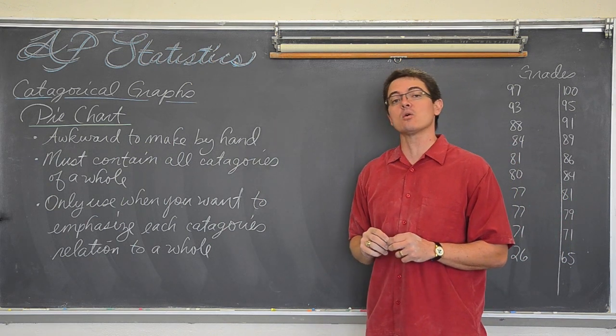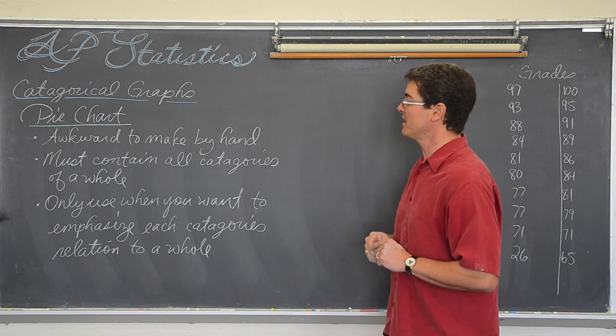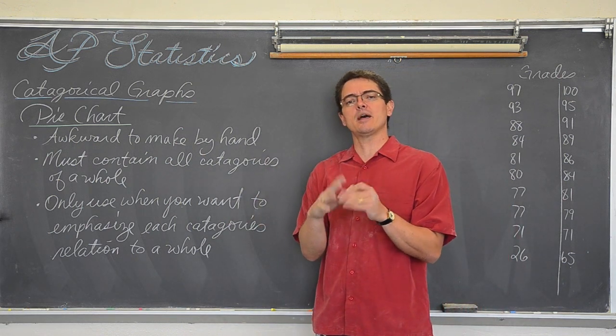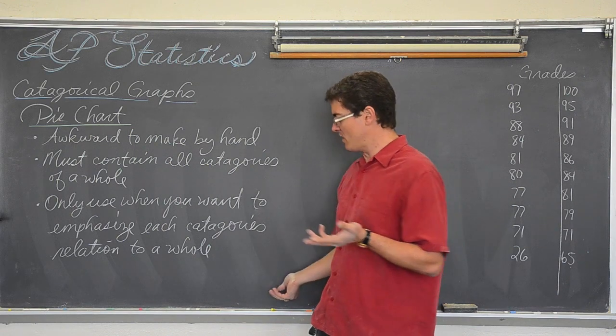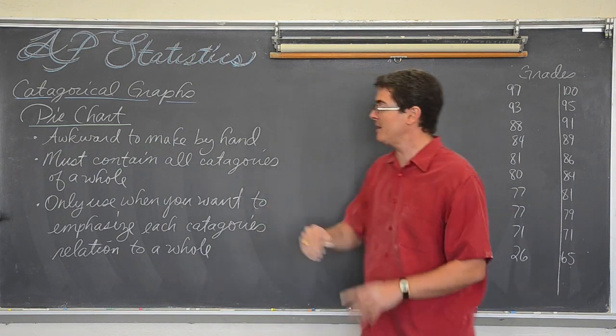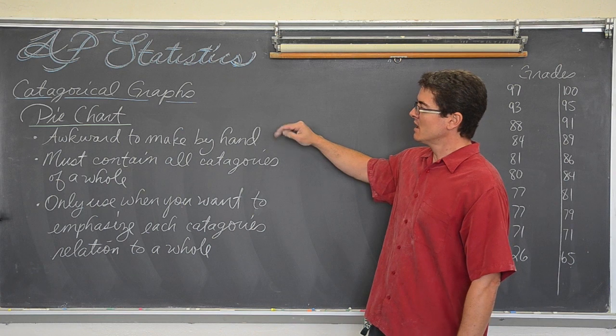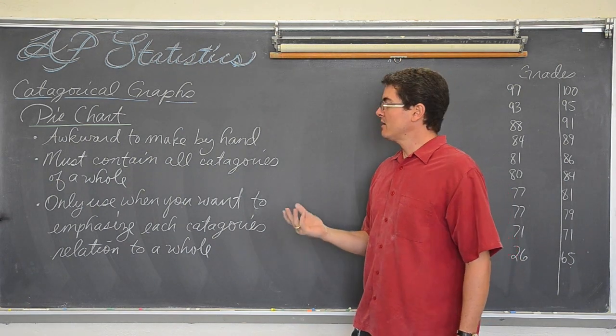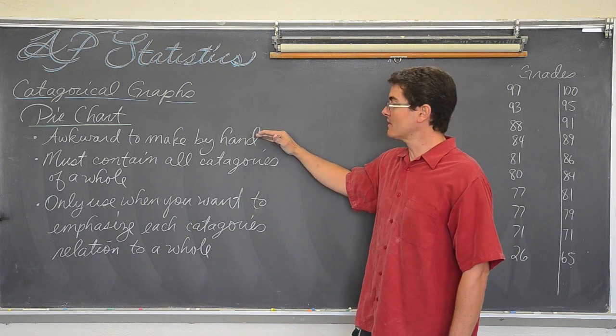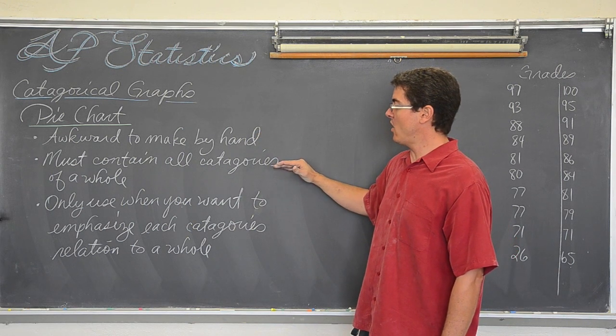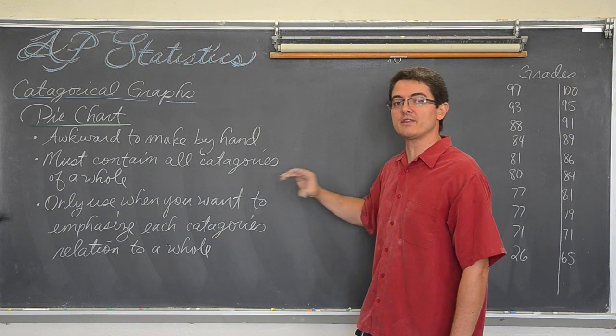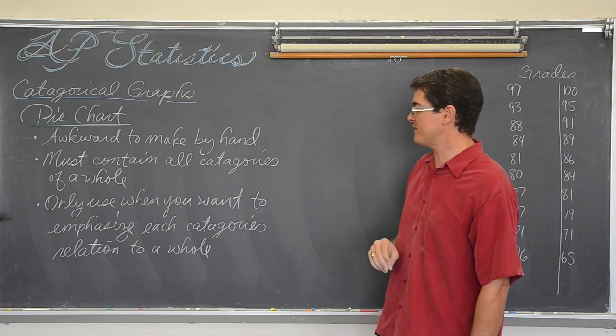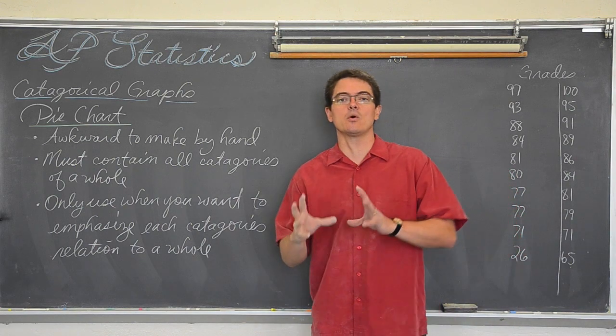That is the categorical variable, or we are going to look at the two categorical graphs. The first type is a pie chart. Those are the circles you see in the newspaper or on the internet. We are maybe not comfortable making them, but we have seen them a lot. Pie charts are good, but without the help of a computer they are a little bit awkward to make by hand. We must contain all the categories of a whole within that pie chart. We only use these when we want to emphasize each category's relation to a whole.